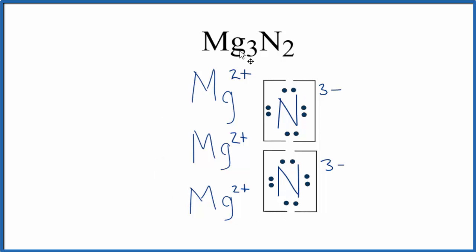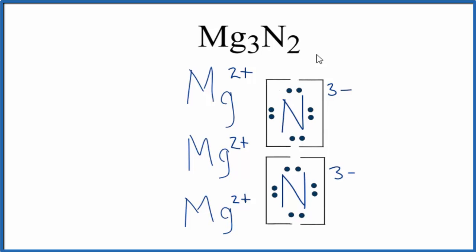So this is the Lewis structure for Mg3N2, magnesium nitride. If you had solid magnesium nitride, it would be a crystal, and that means it would be made up of a number of these formula units in a repeating pattern. But this is really useful to show us that each magnesium transferred its electrons to the nitrogens, and that's what formed our ionic bond in the Mg3N2 Lewis structure.